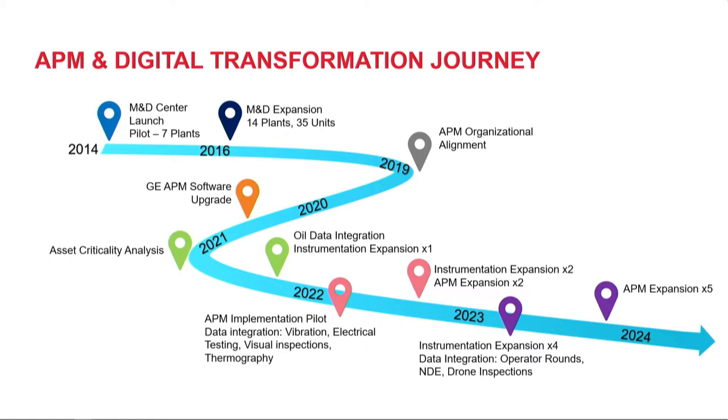After the organization was in place, we identified gaps for success. One was our software — we were on Meridium version 3.5. We did an upgrade with GE to version 4.4 in 2020. Then in 2021, we had to accept an honest truth: we did not have reliable asset criticality data. So we took a step back and said this is foundational — it's fundamental to everything we're doing. We took a year and performed asset criticality analysis across our fleet, ranking about 200,000 assets. Over half of them had changed in their classification from before, which shows that previous attempts lacked time, dedication, and a consistent methodology.